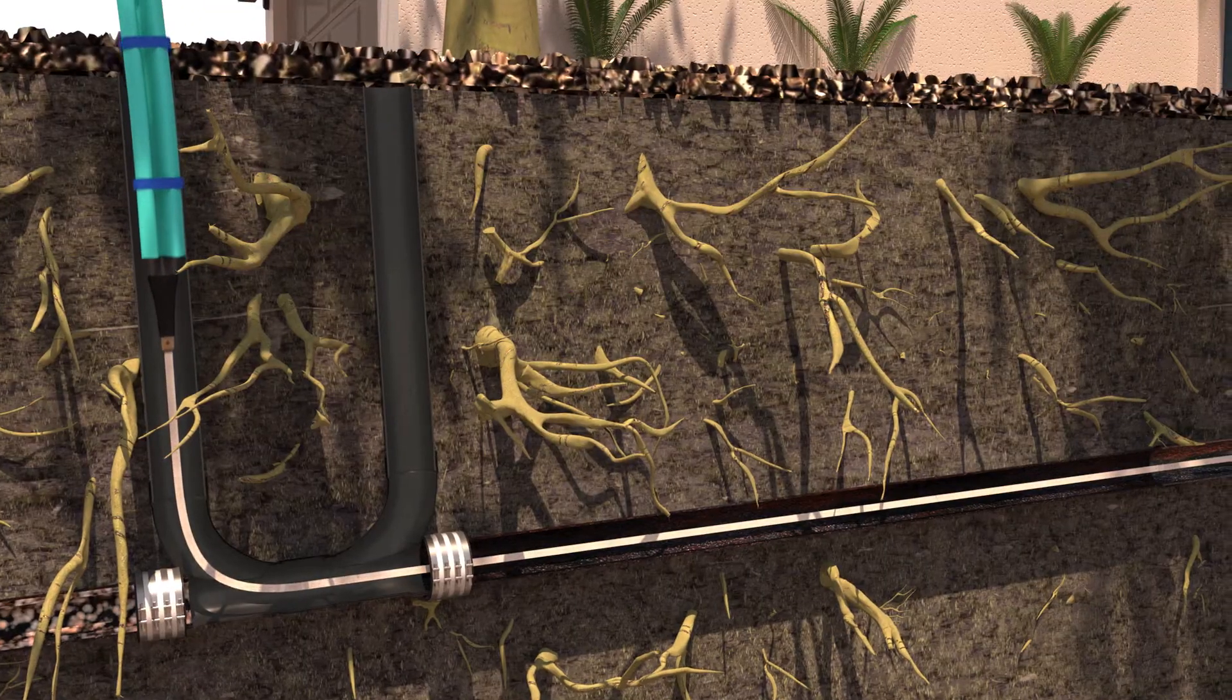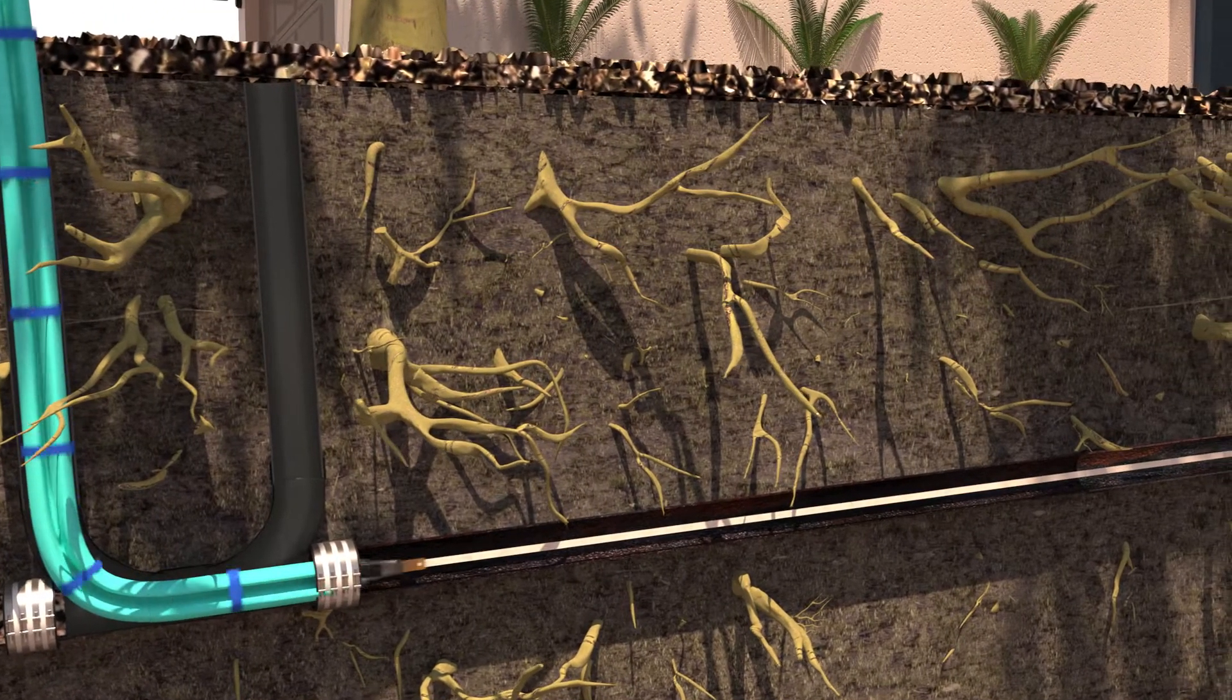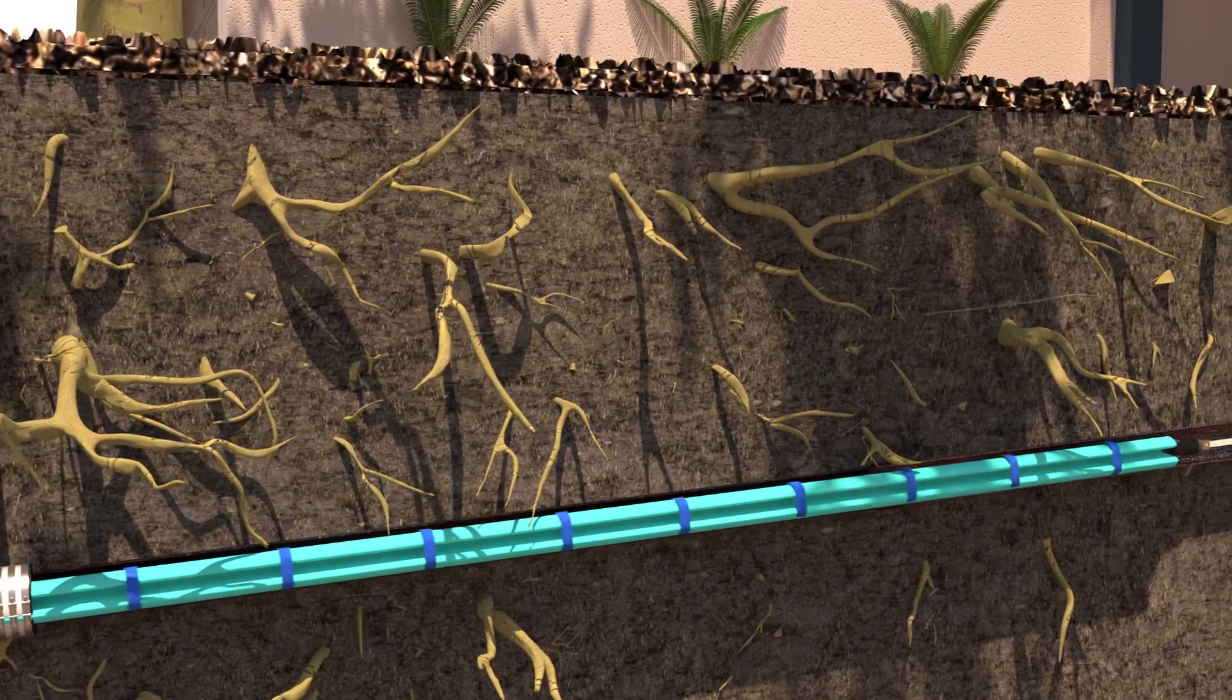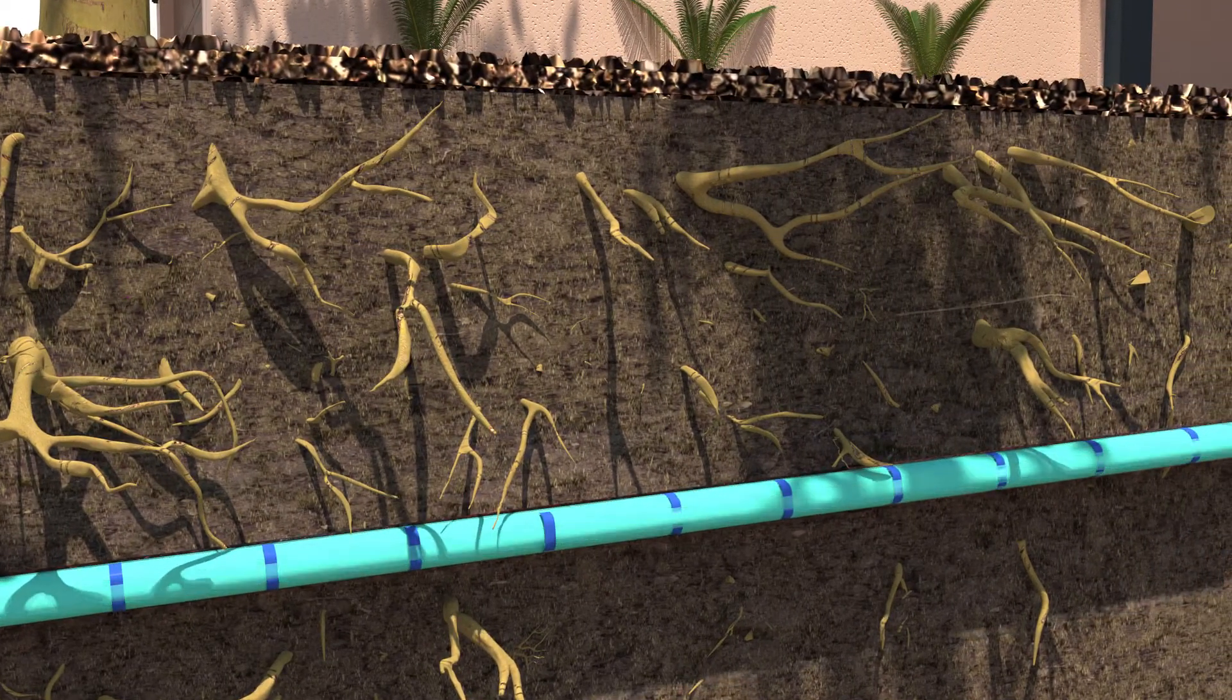Then the liner assembly is pulled into place through the access point. The bladder is filled with pressurized air, inflating the liner so that it adheres to the interior of the host pipe.